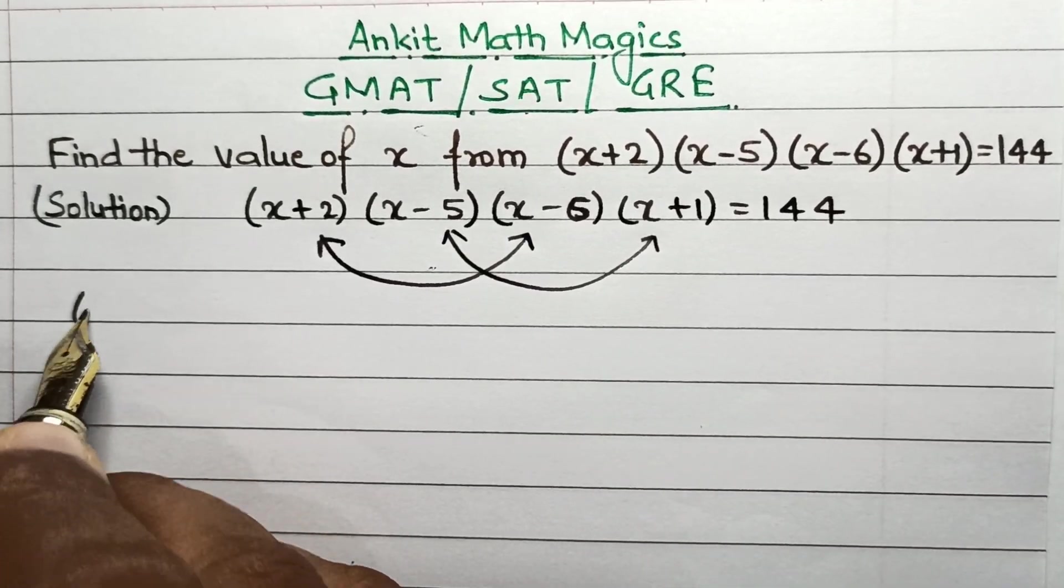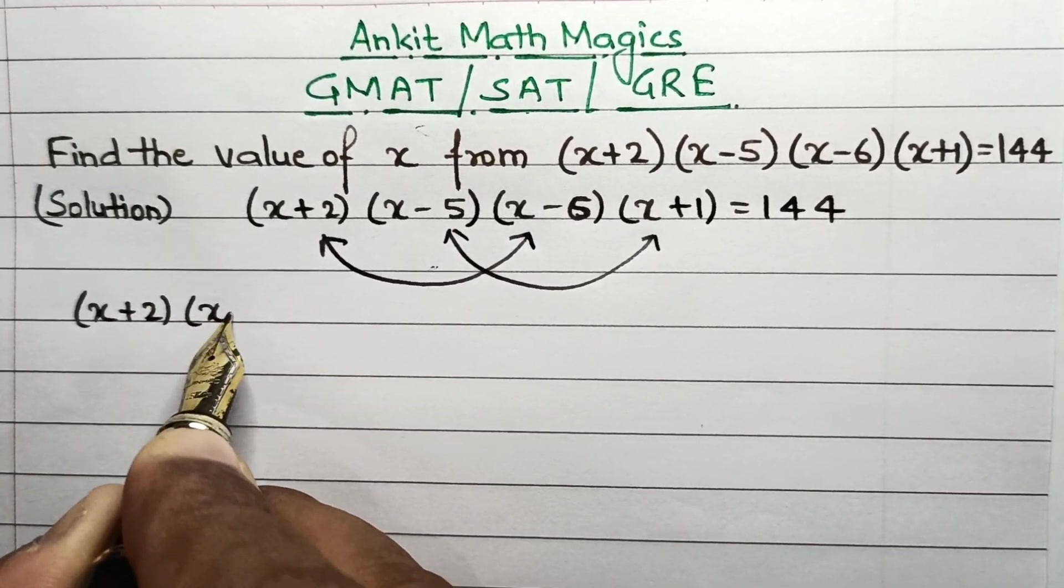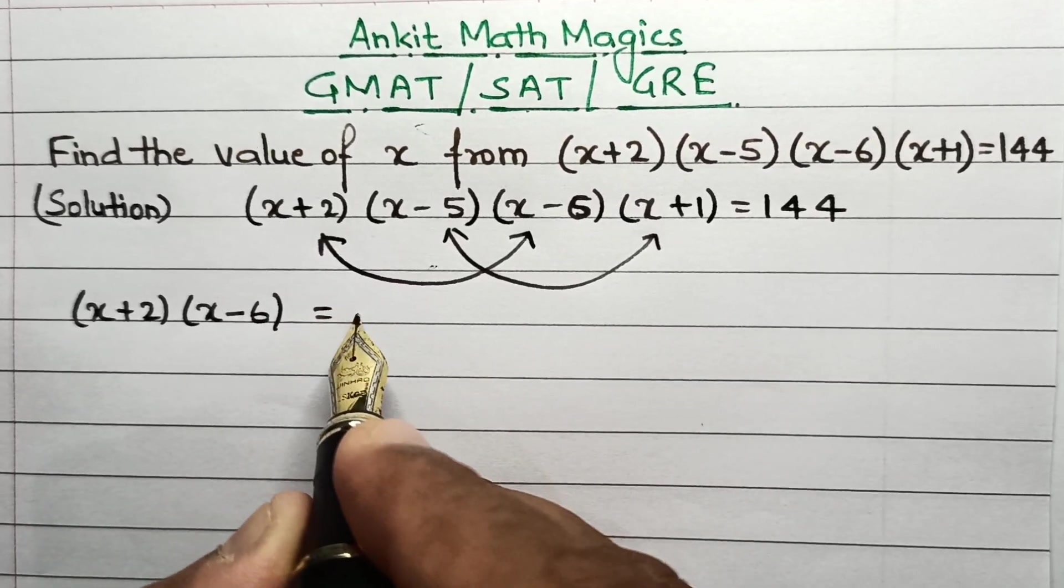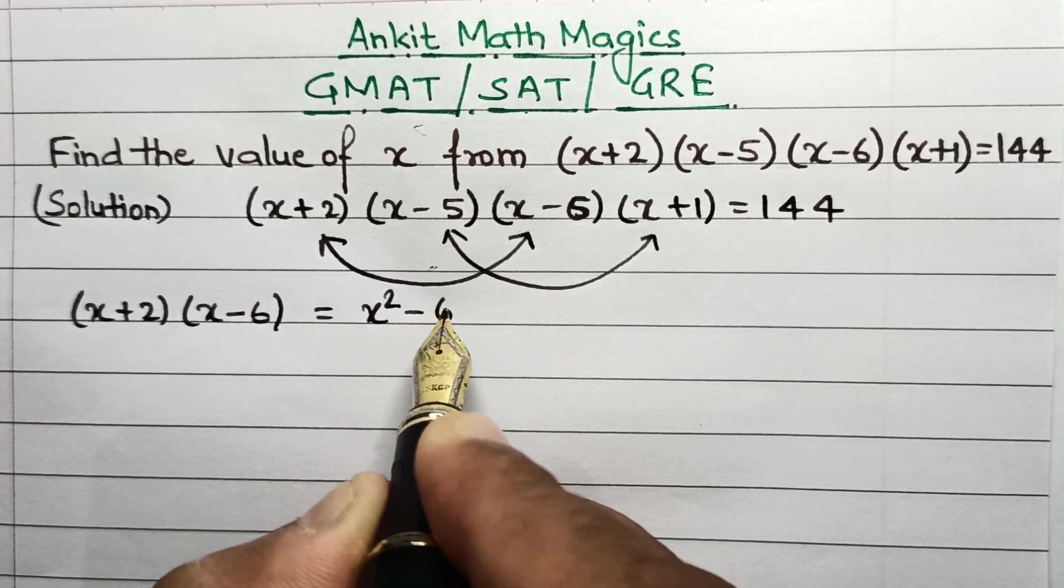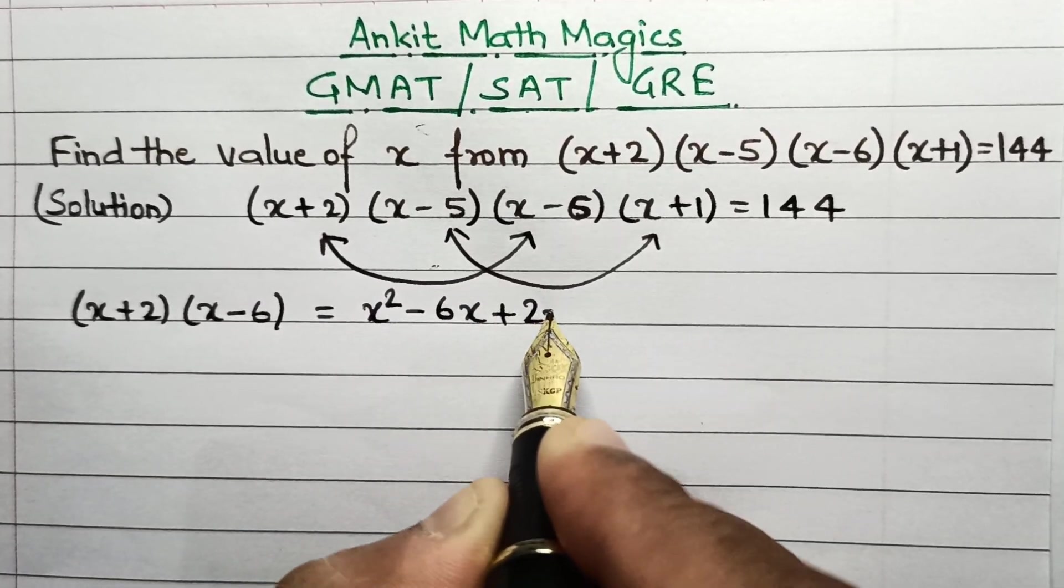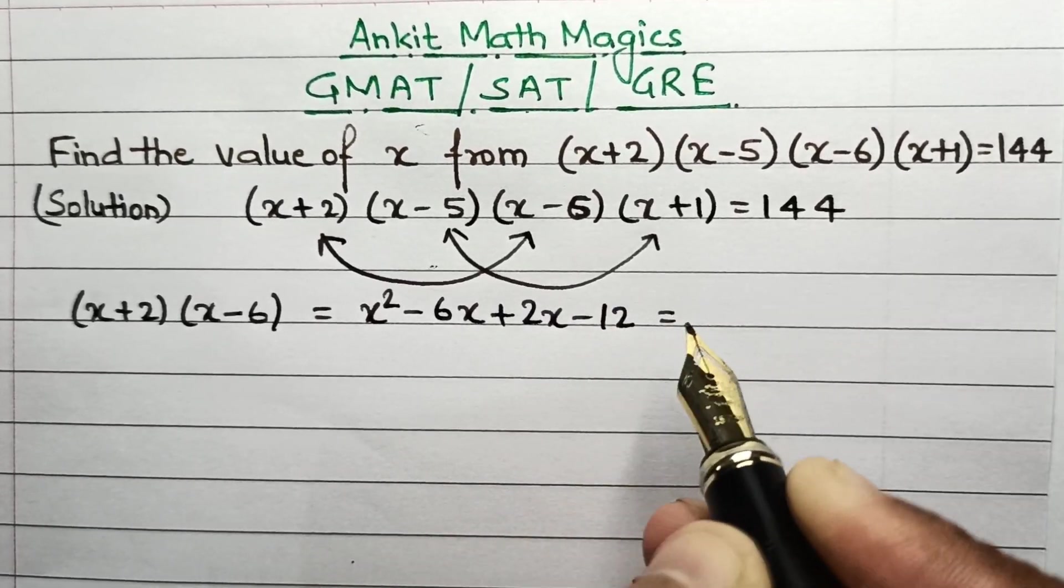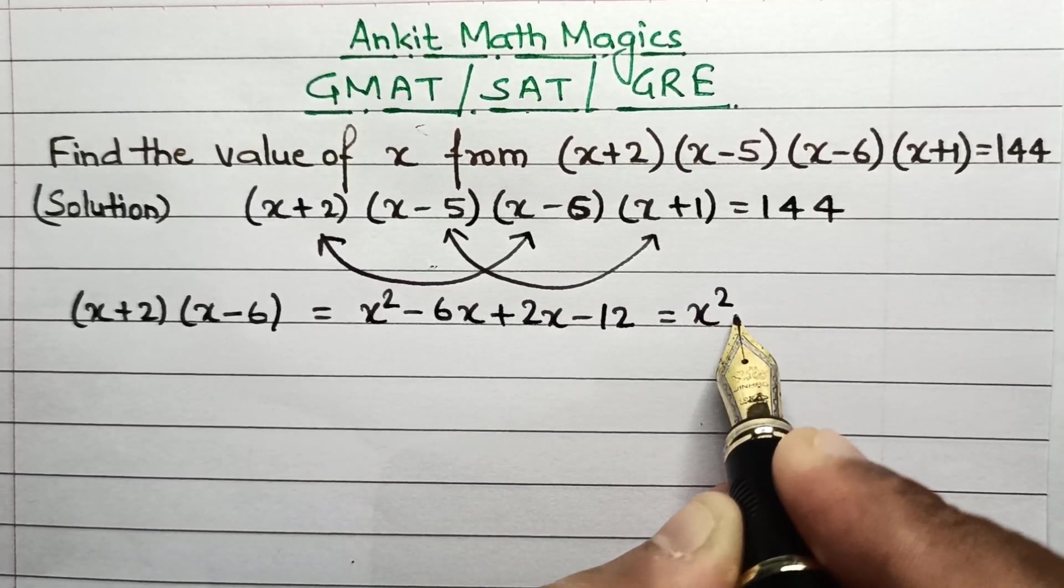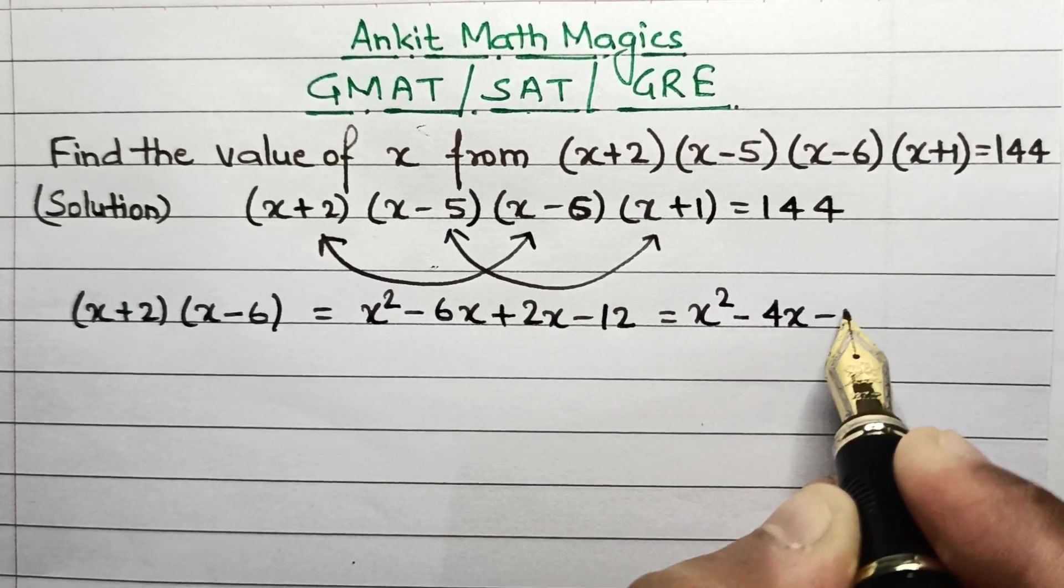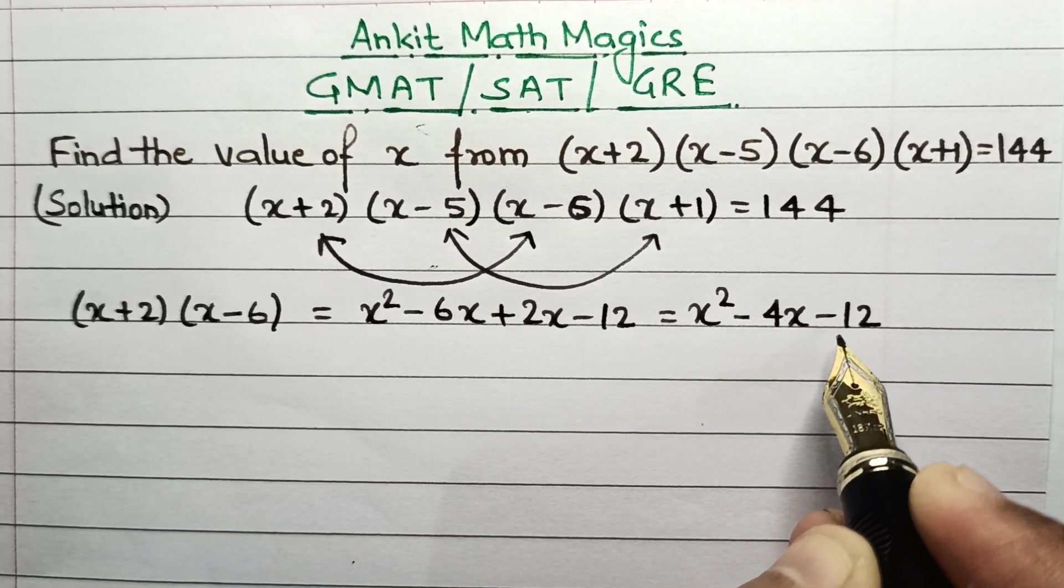So that means (x+2)(x-6). Now this can be written as x² - 6x + 2x - 12, which will be equal to x² - 4x - 12. This is the first part right here.